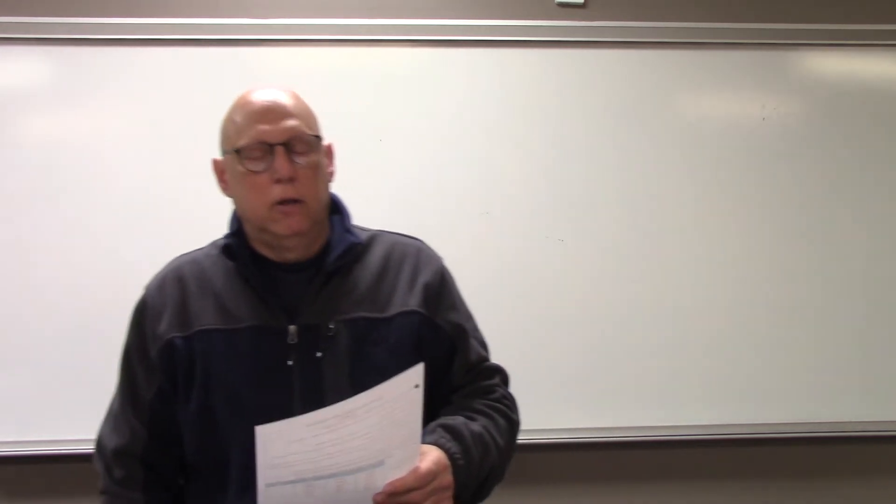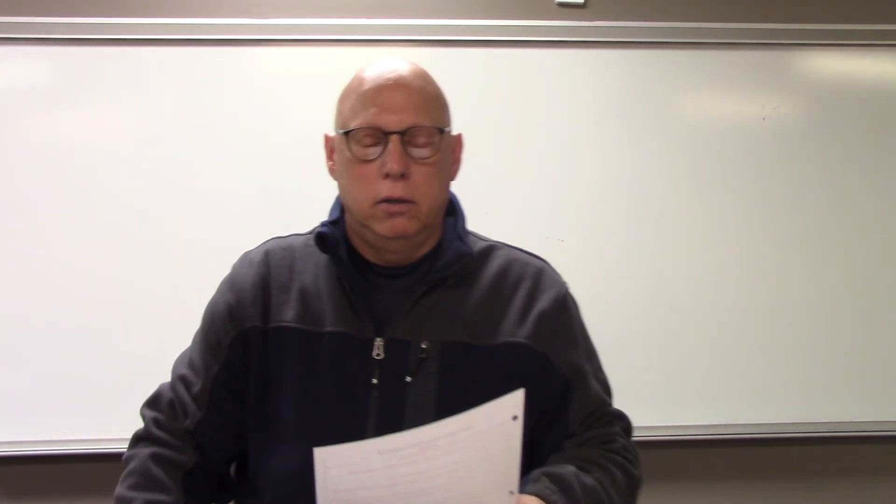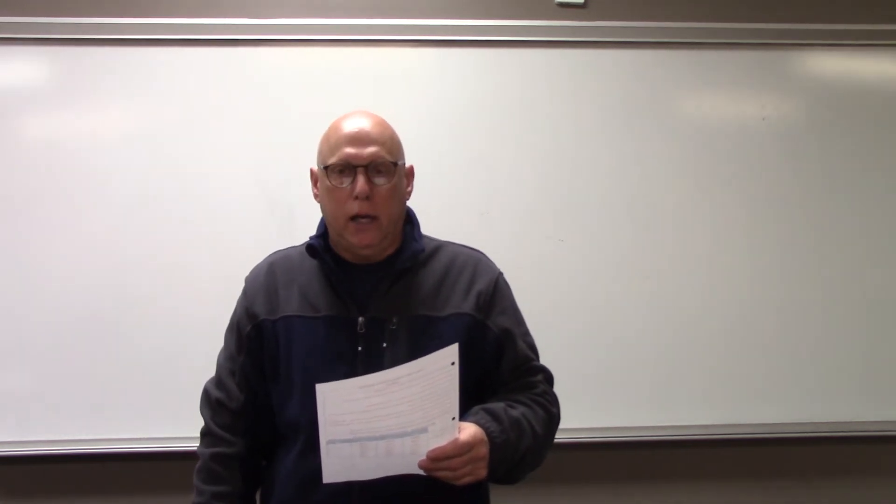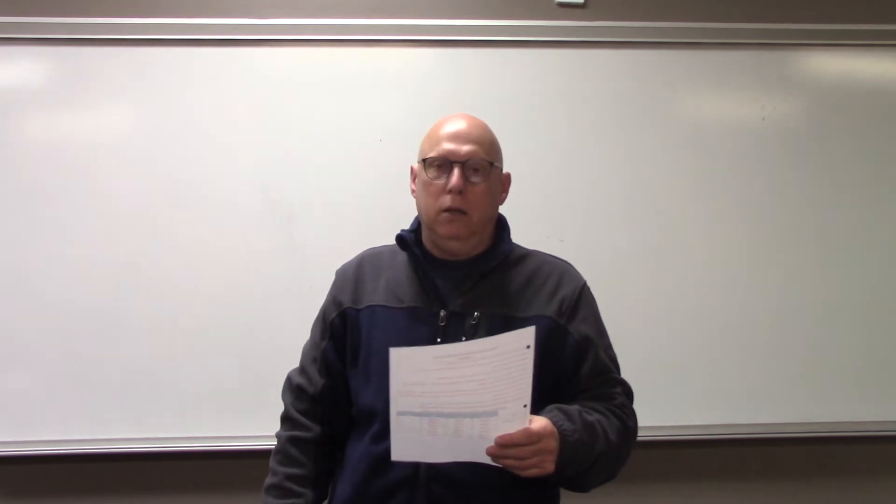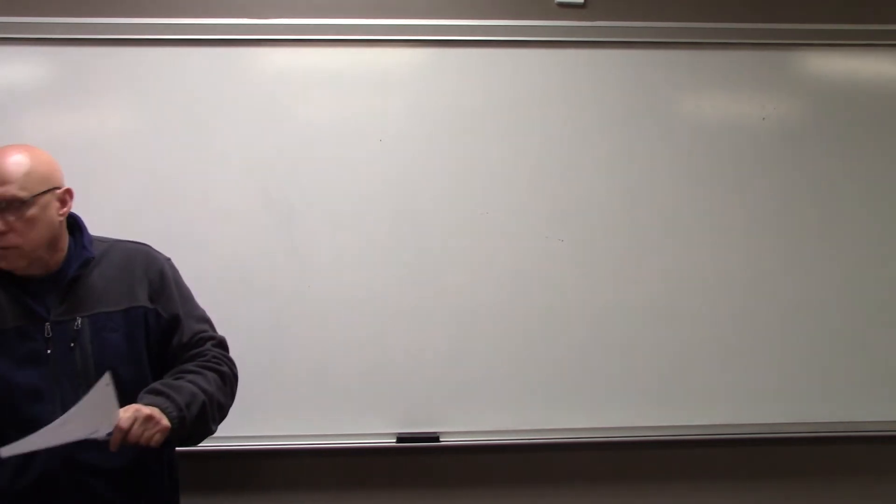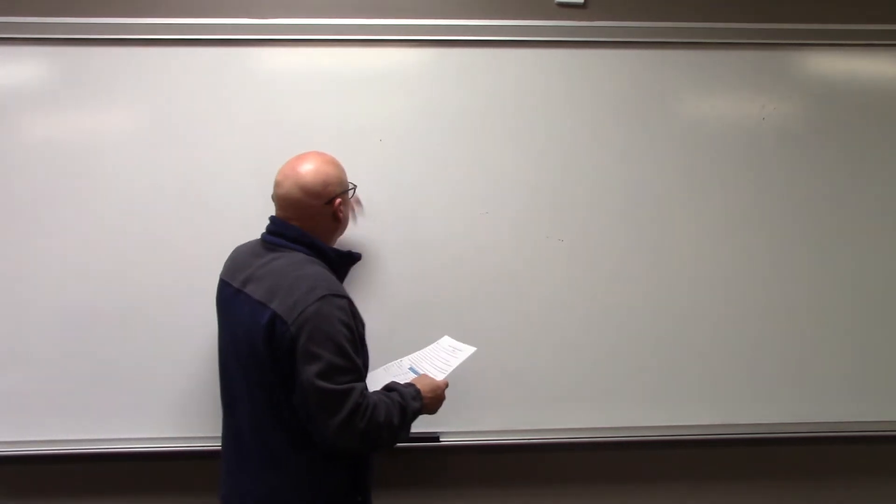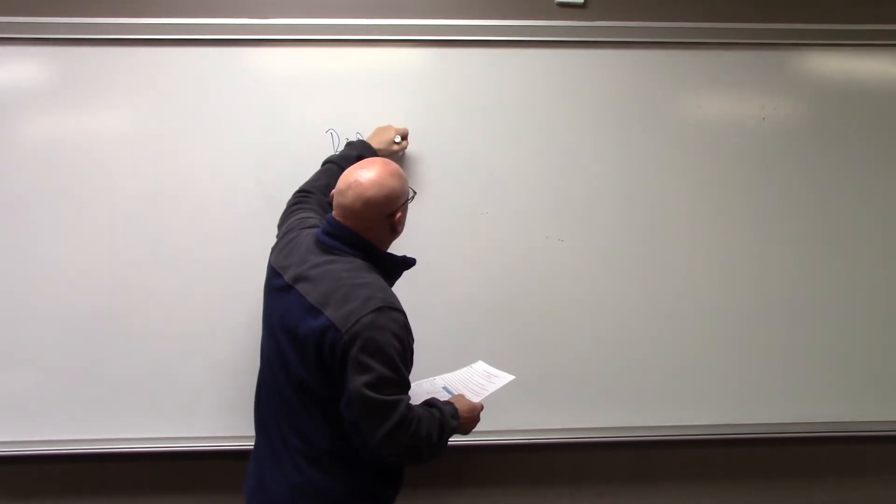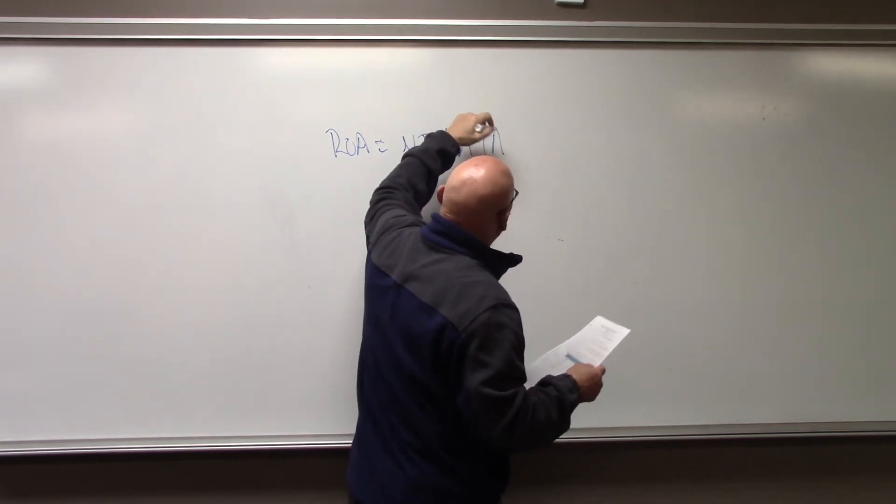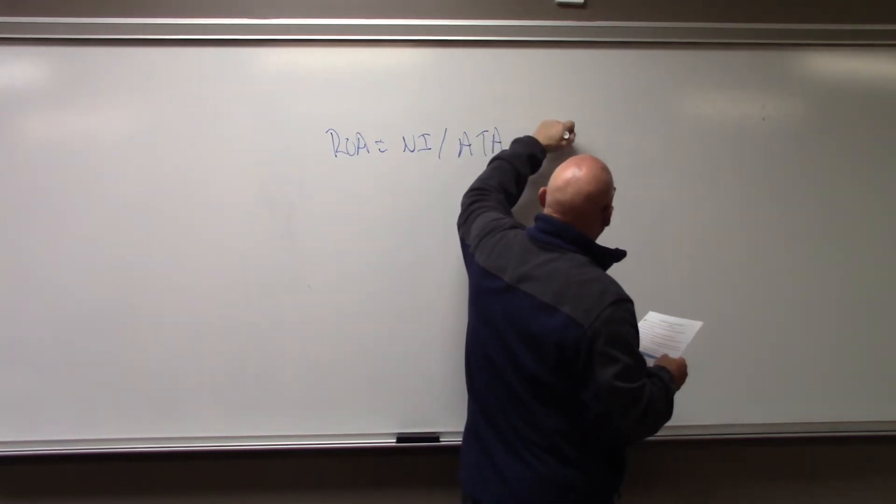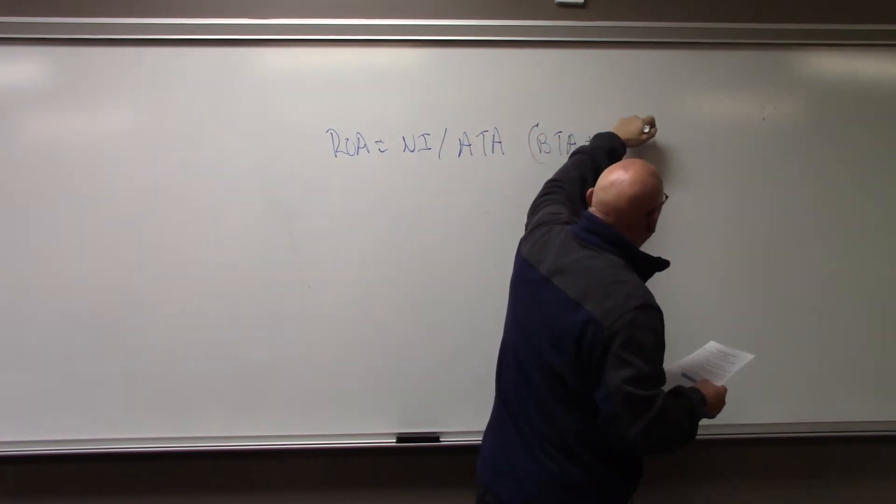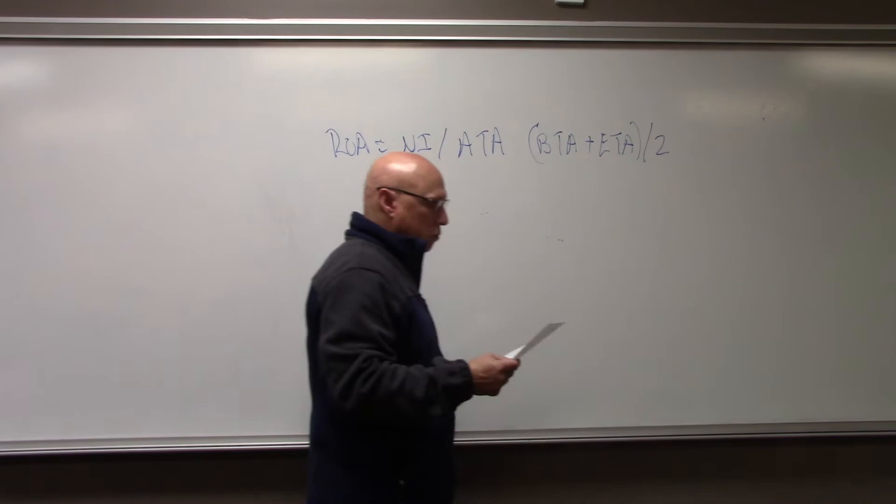What is the short formula for return on assets? Net income divided by average total assets. Return on assets equals net income divided by average total assets, and that is beginning total assets plus ending total assets for the year divided by two.